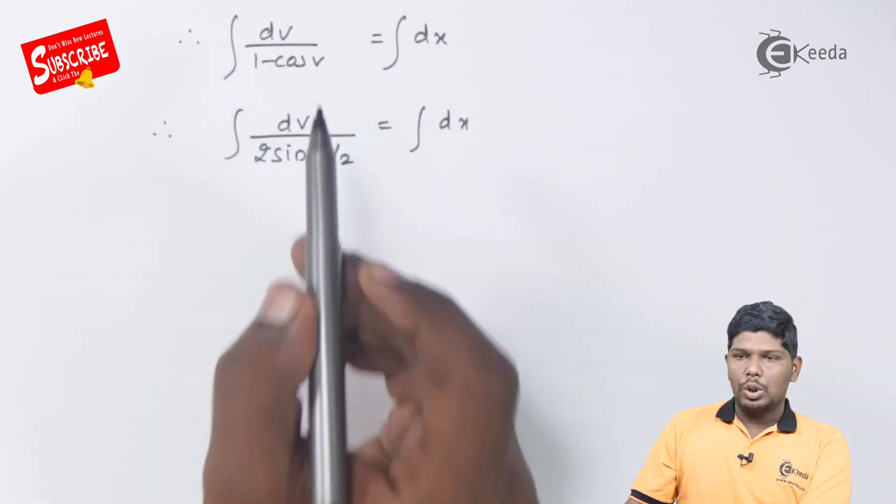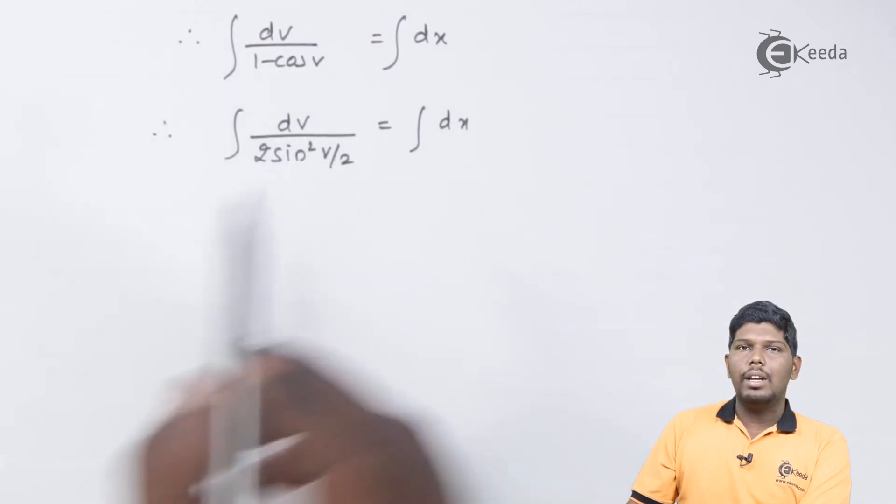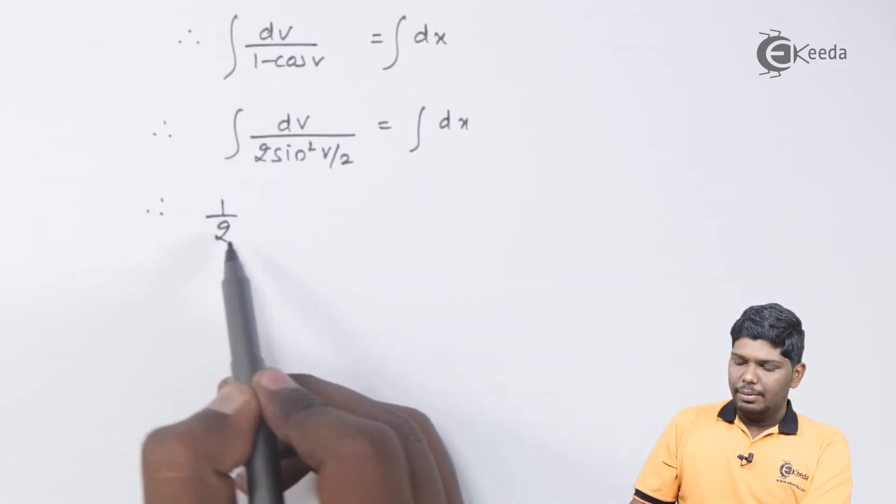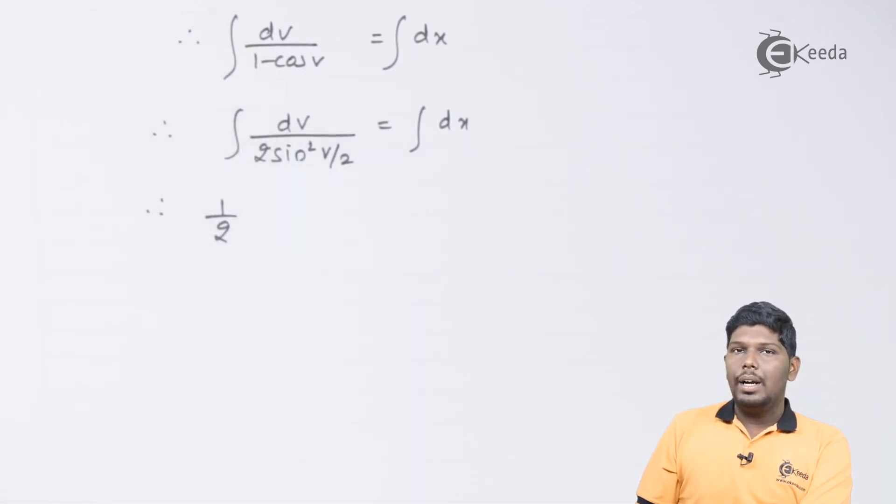Similarly, 1 minus cos v can be written as 2 sin square v by 2. Taking 1 by 2 constant, 1 upon sin square can be written as cosec square.